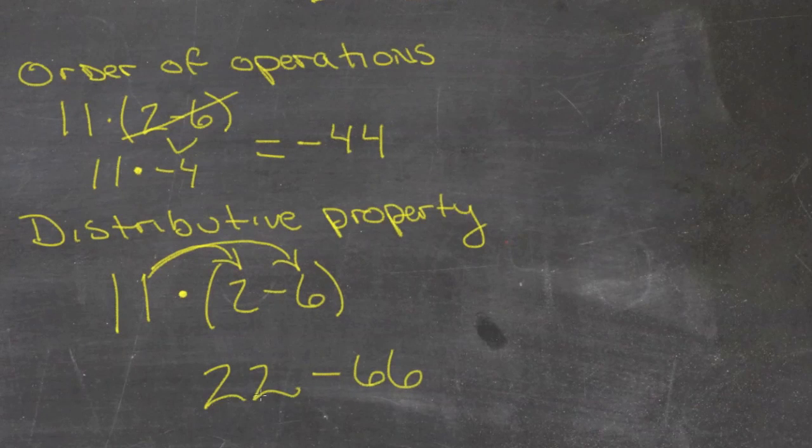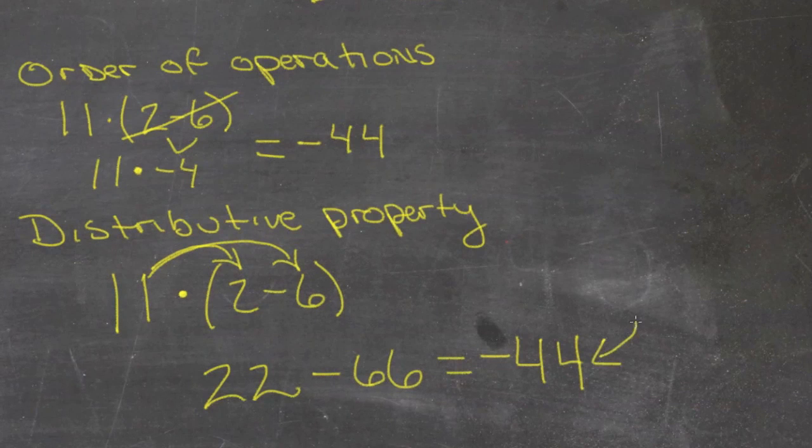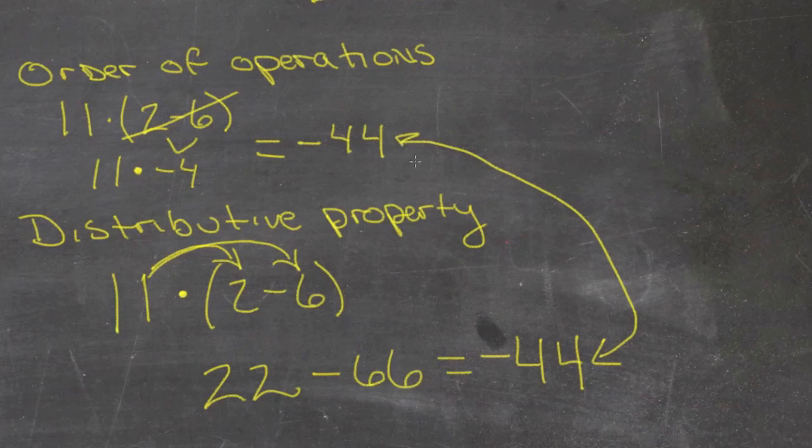So that means we're combining 22 and negative 66, which is negative 44. And we can see that the answer came out the same as it did when we followed the order of operations.